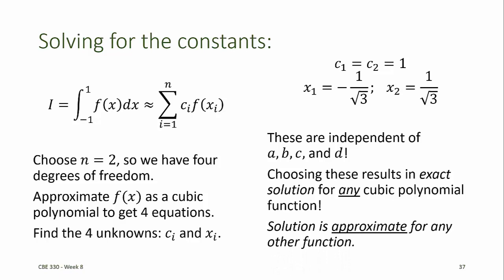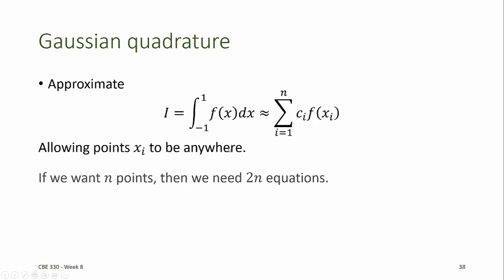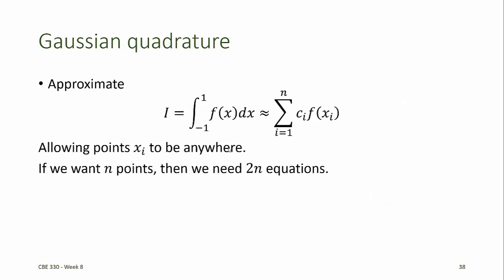Of course, the solution is approximate for any function that's not a cubic polynomial. So let's generalize this. If we want n points, then we need 2n equations, because each point has two unknowns, an unknown weight and an unknown location in the domain at which we're going to evaluate it. So we assume f(x) then is a 2n minus 1th degree polynomial.